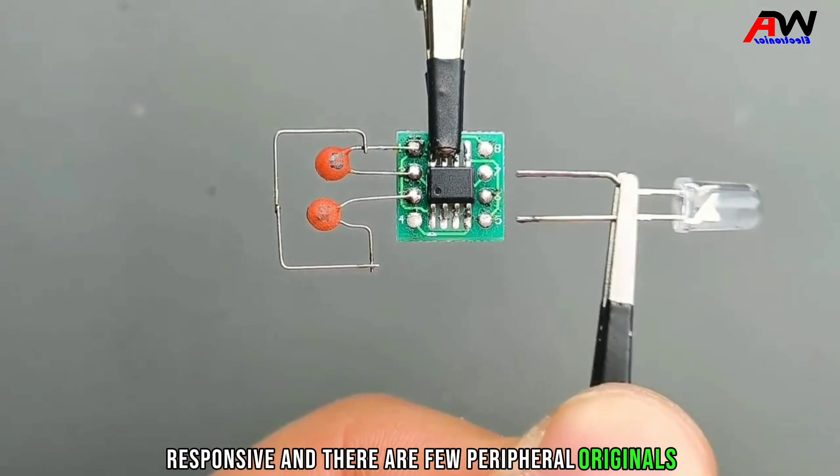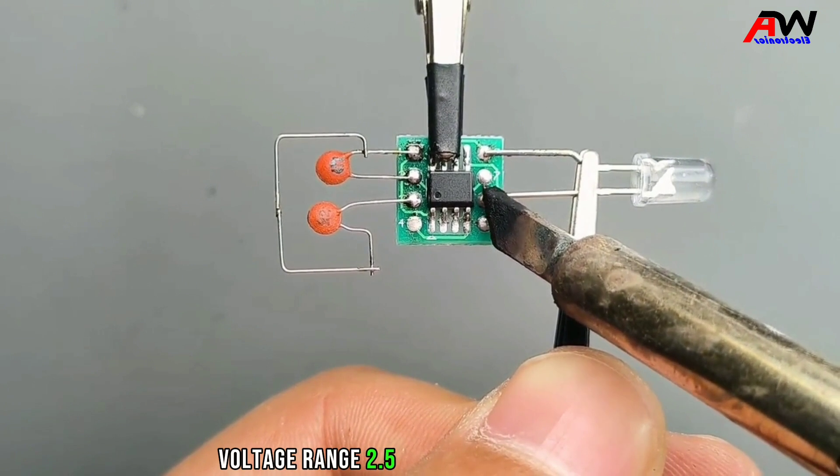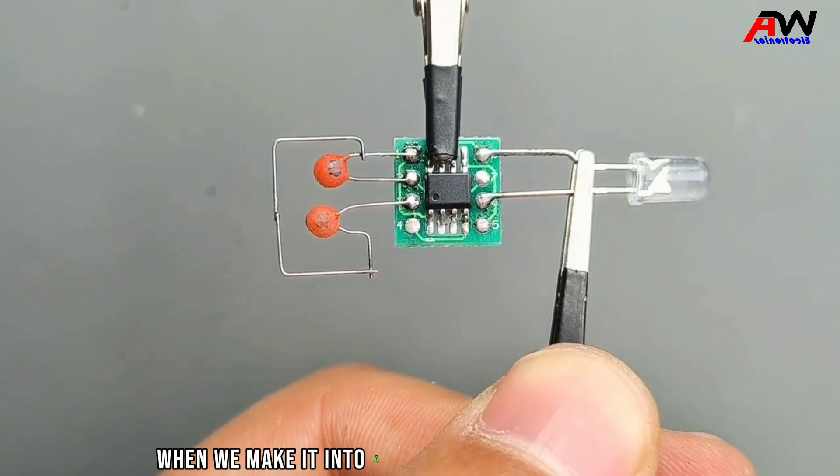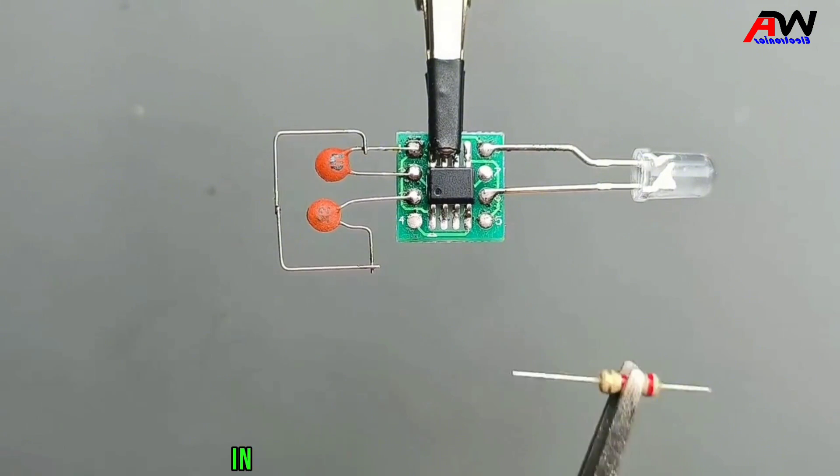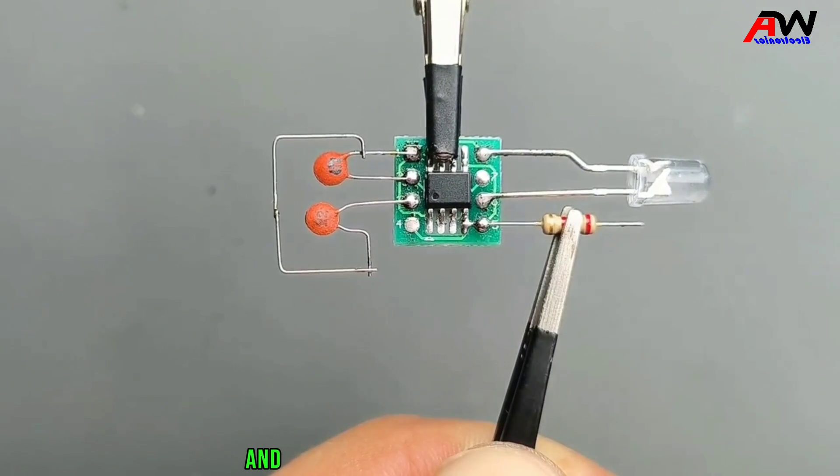When we make it into a water level detection switch, in order to achieve higher sensitivity, you need to short pin 4 and 5 corners of the chip together.